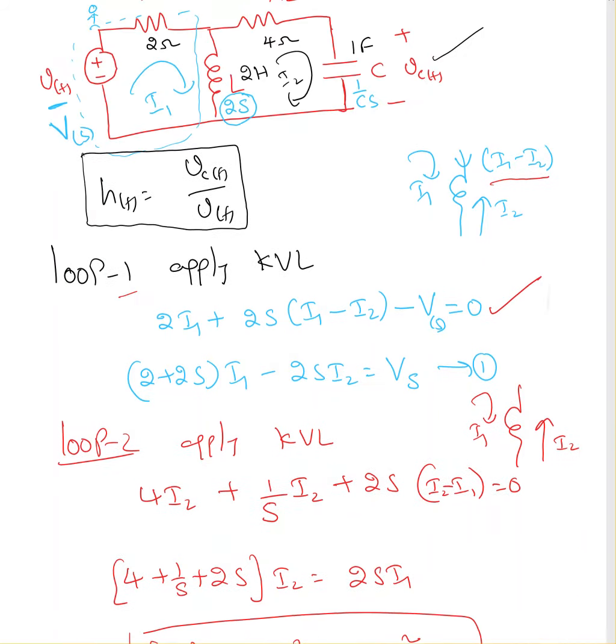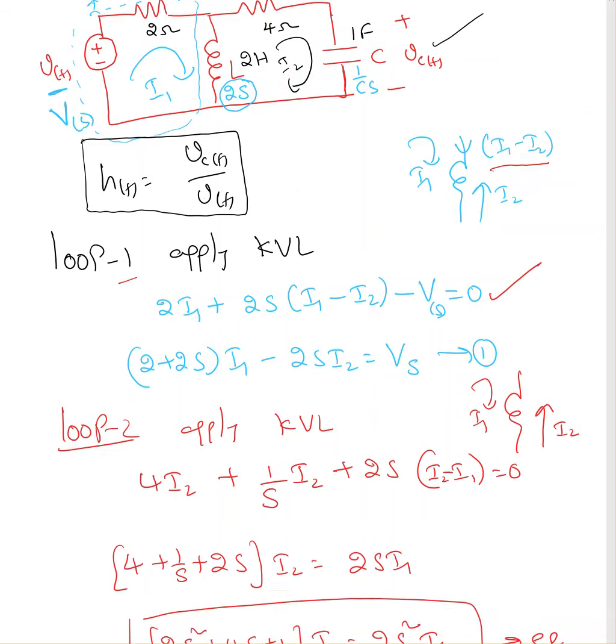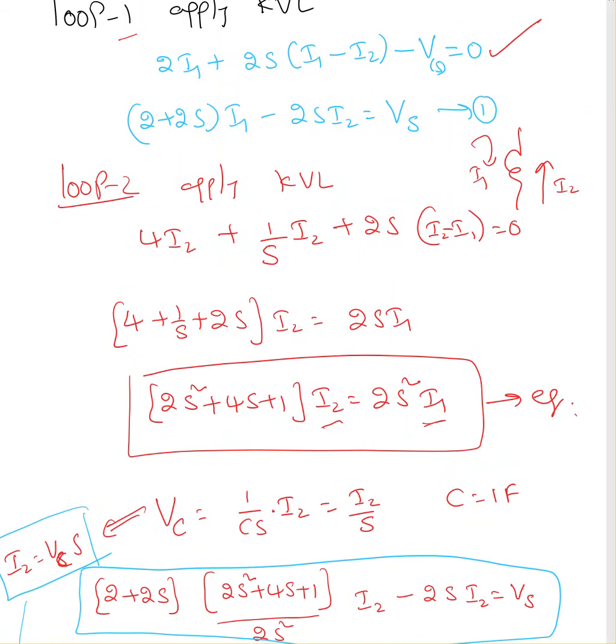Now, my output voltage, VC is nothing but I2 times 1 over Cs. Here it is, I2 times 1 over Cs. I mean, C value is 1 farad, so I2 over s. So now I have relation between VC and I2.